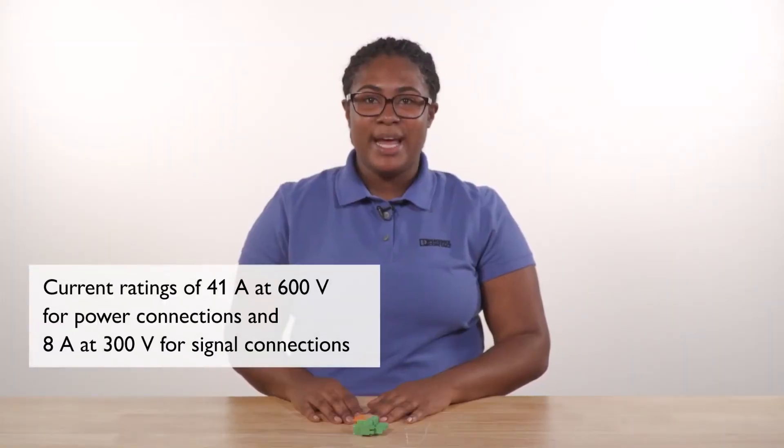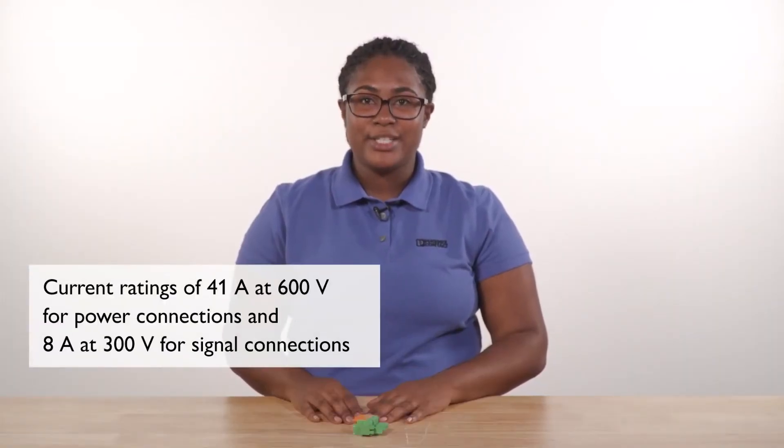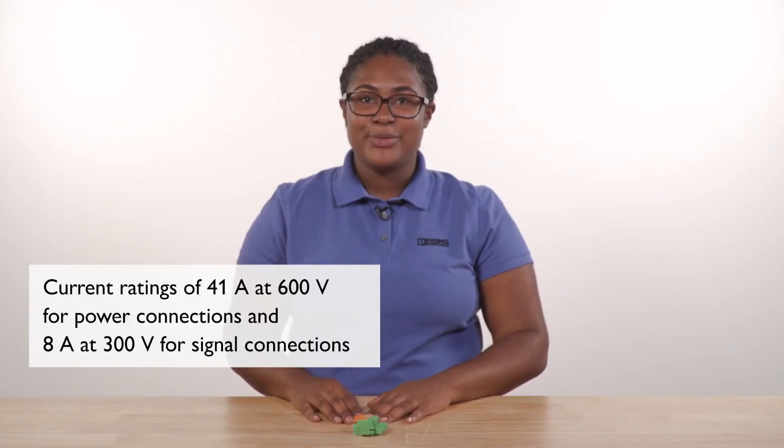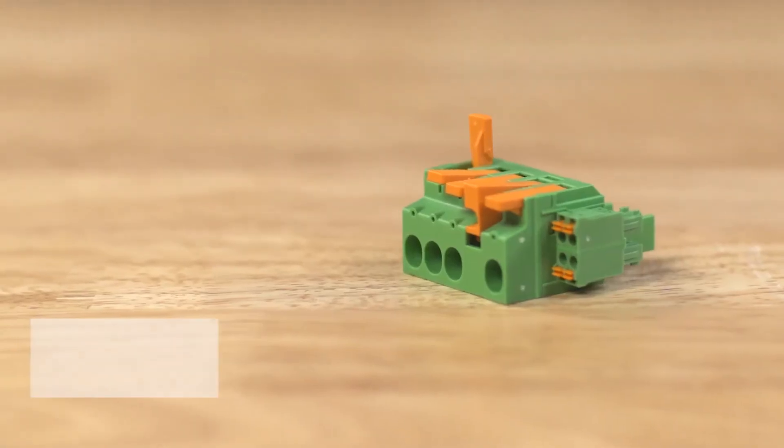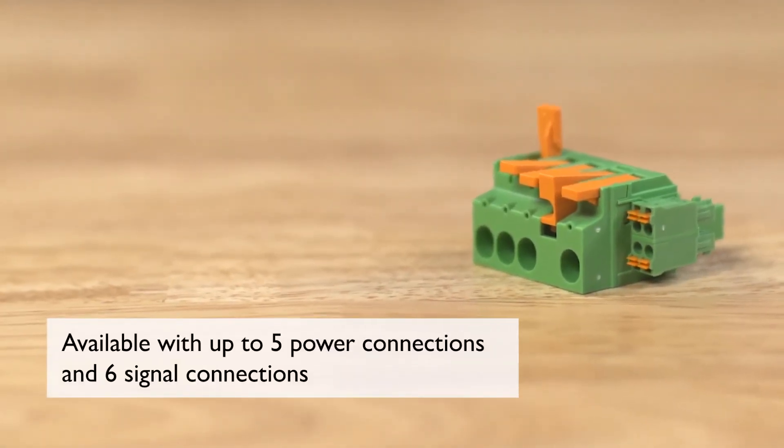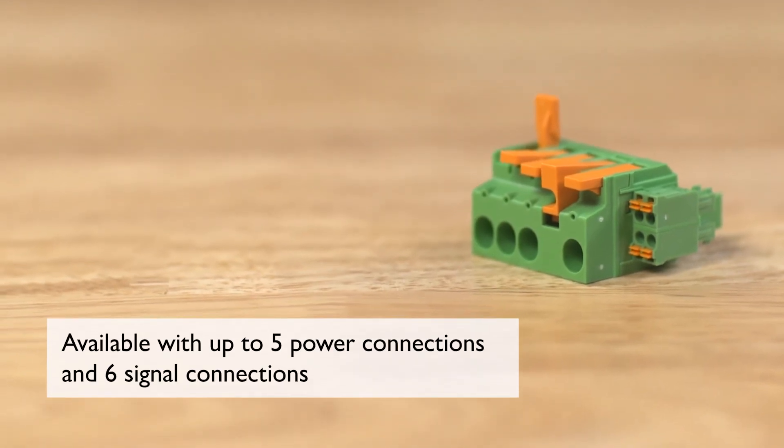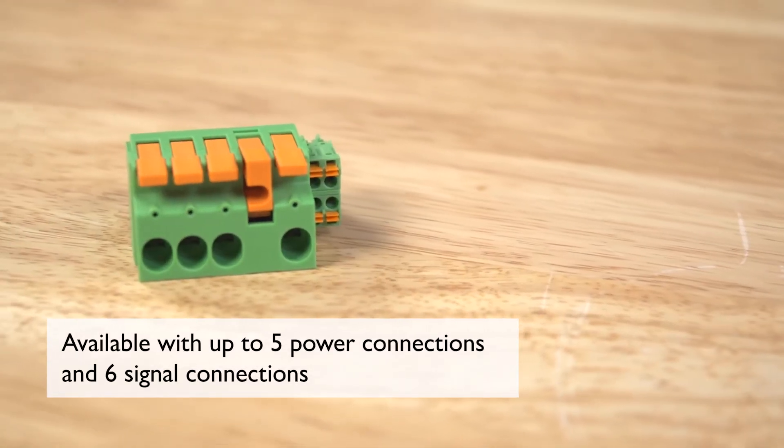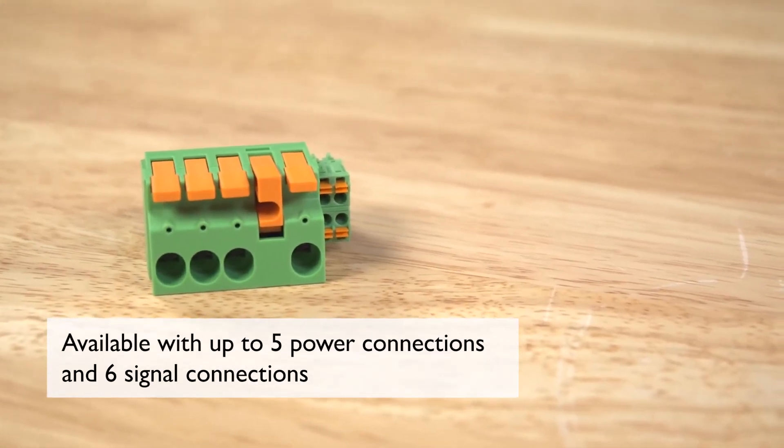With ratings of 41A at 600V for power connections and 8A at 300V for signal connections, the LPCH-6 is available with up to 5 power connections and 6 signal connections in the same connector, making it suitable for a wider range of requirements.